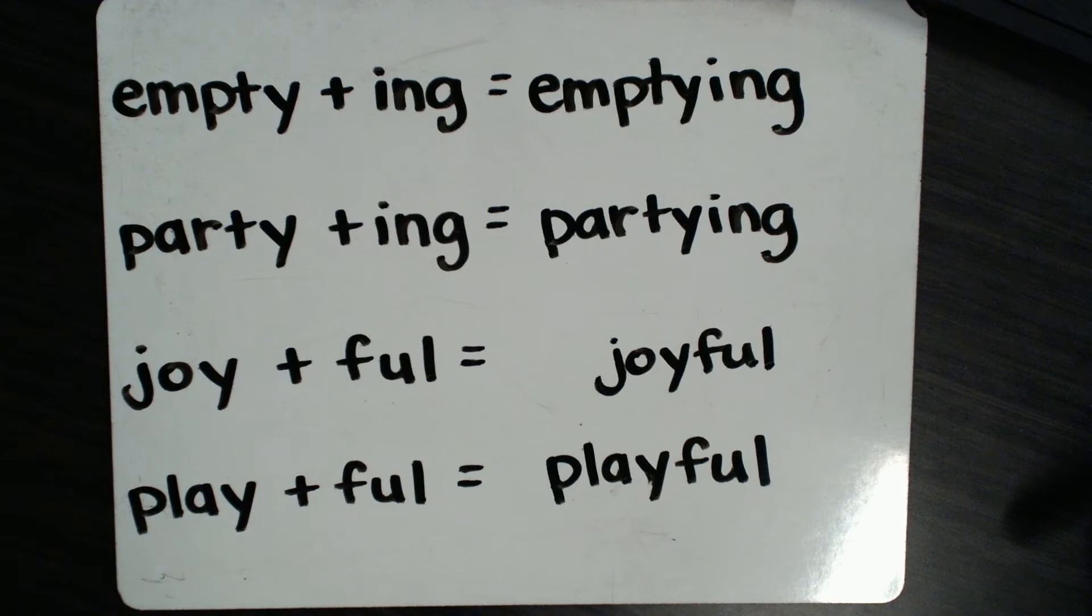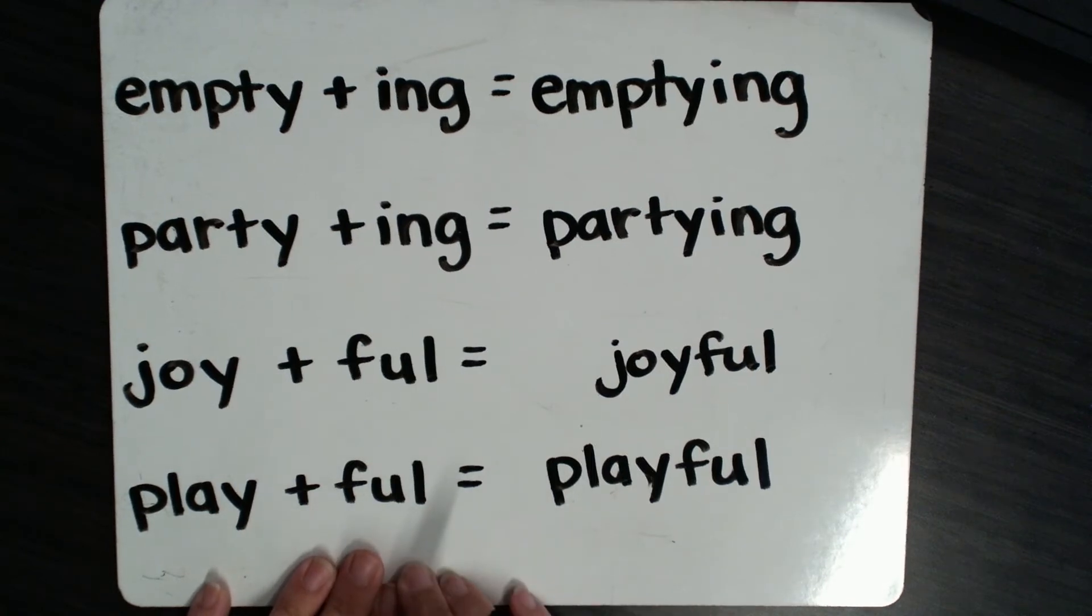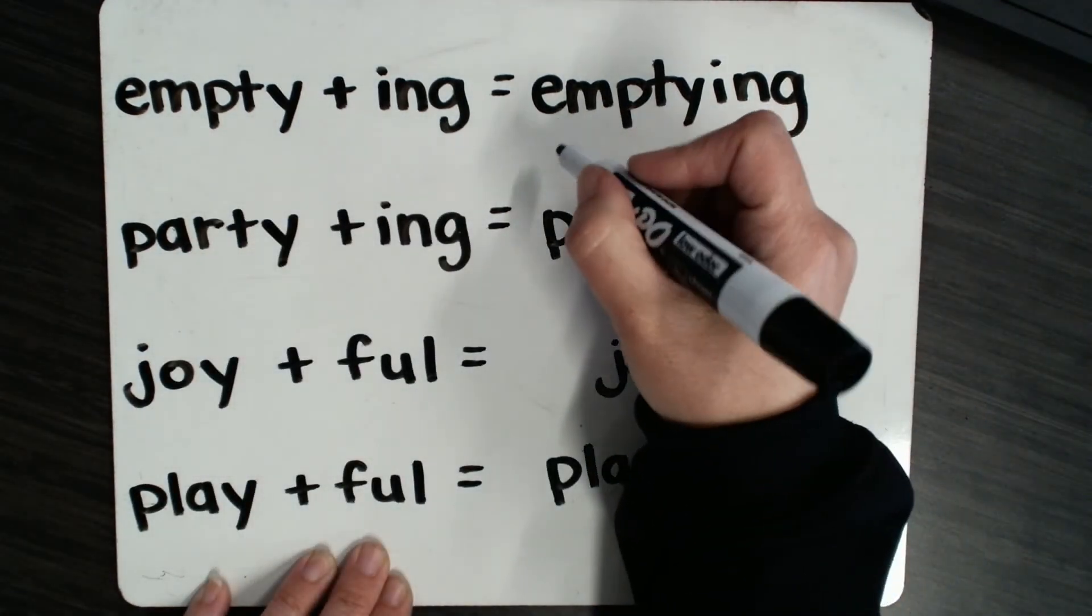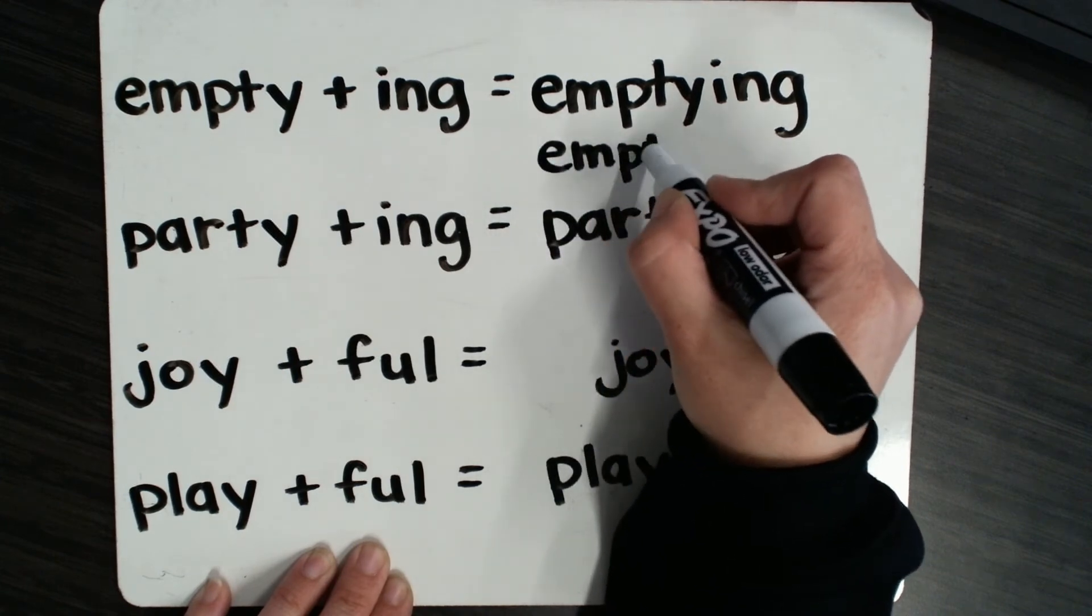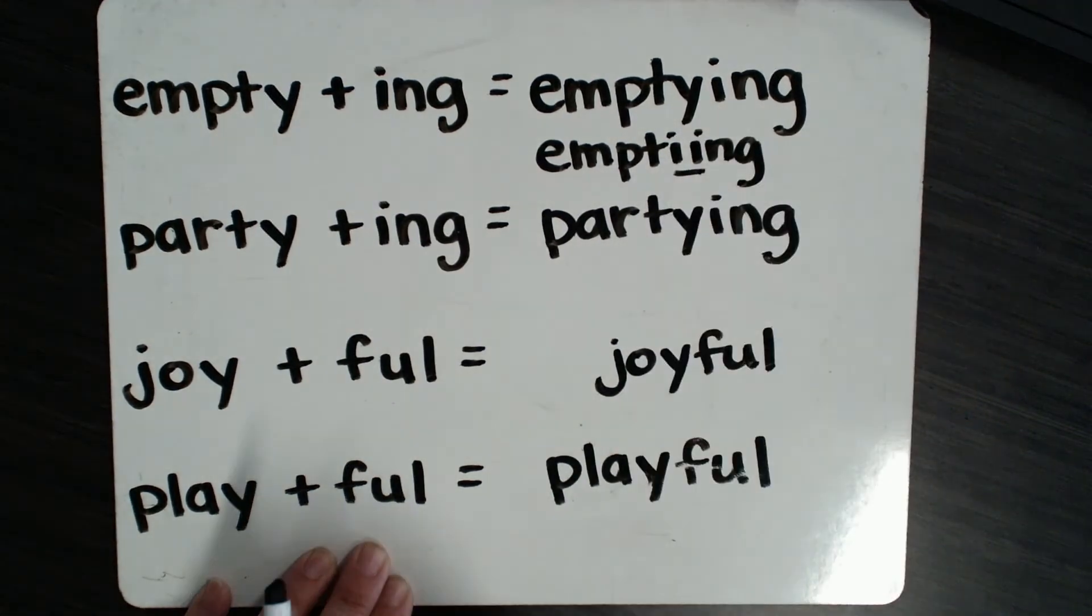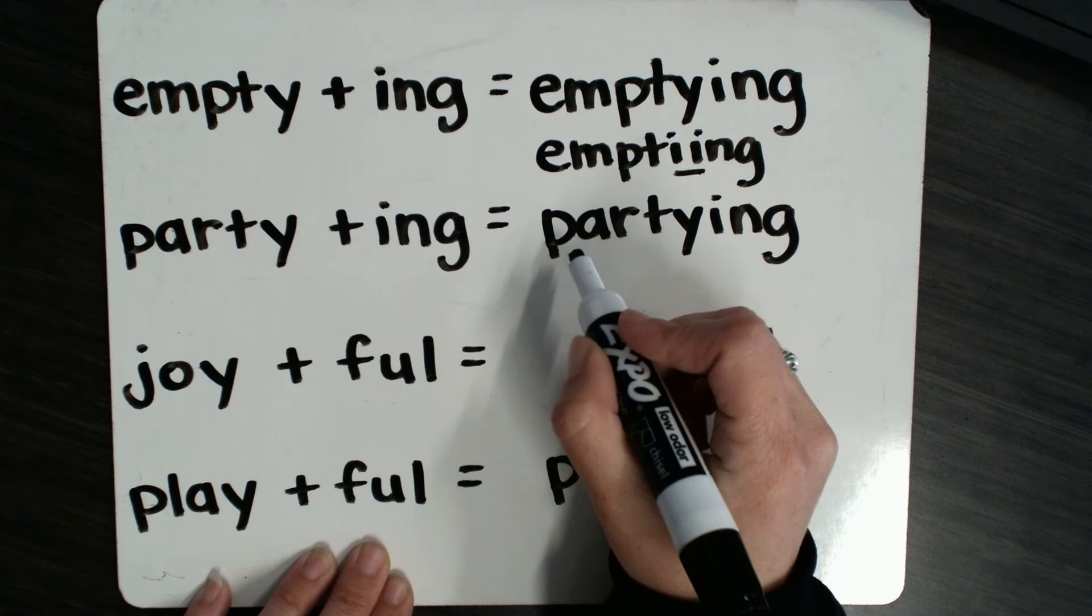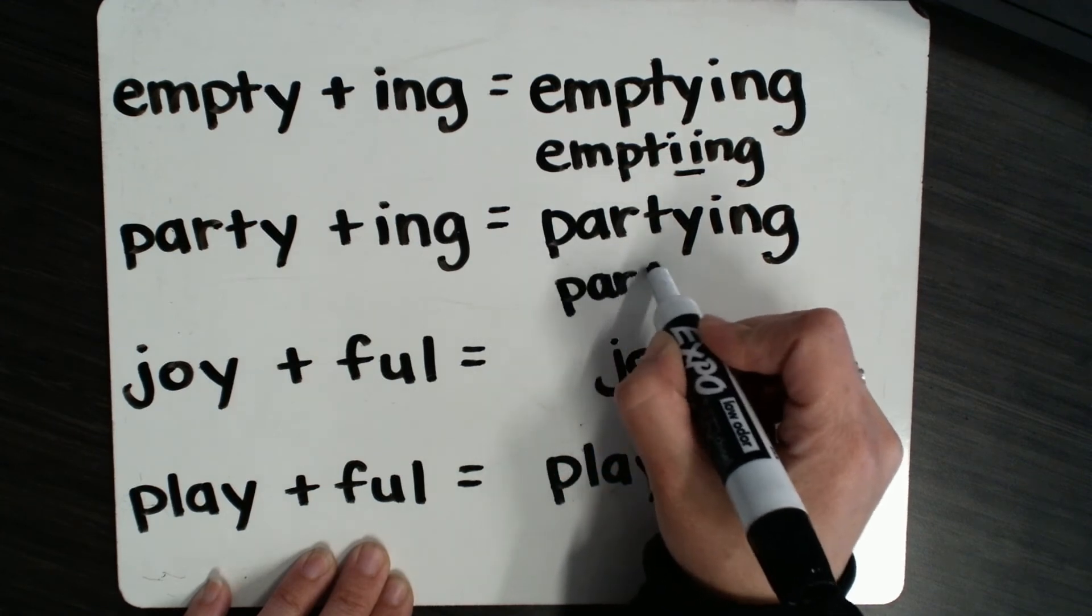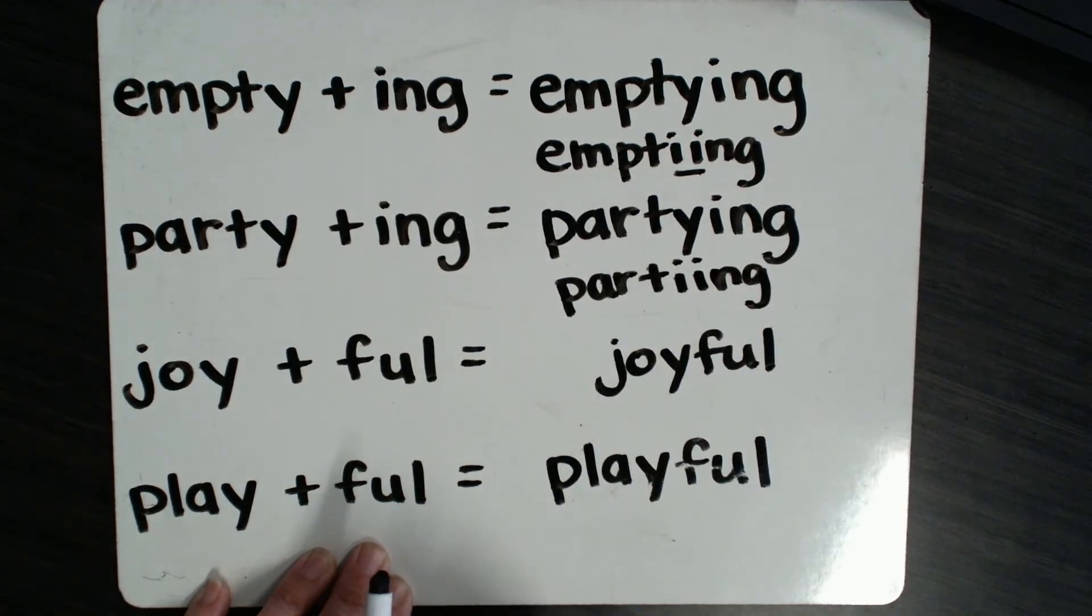One thing that can help you when you're remembering these exceptions is there's not very many words in our language that have two i's right together. Let me show you for emptying. If we changed that y, we would have two i's there. There are not very many words where we see two i's right together. Same with partying. You can see that it doesn't look right when we have those two i's together.